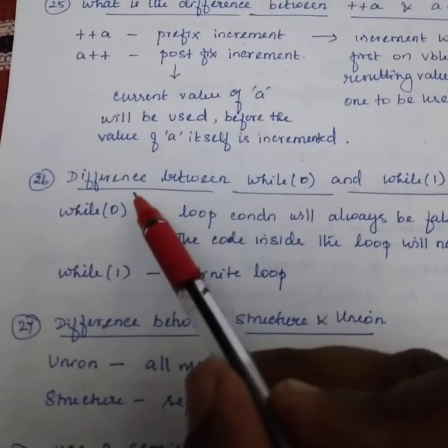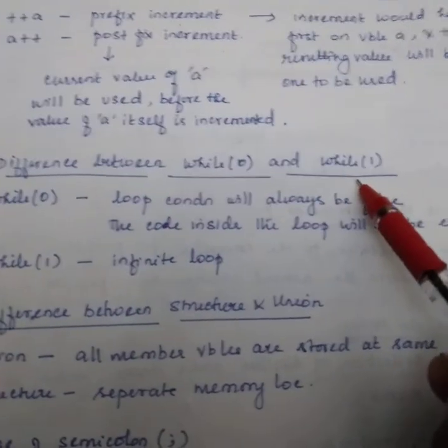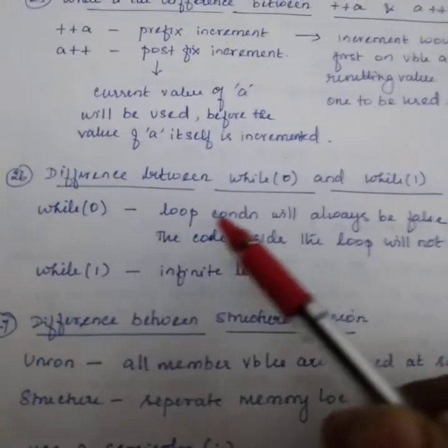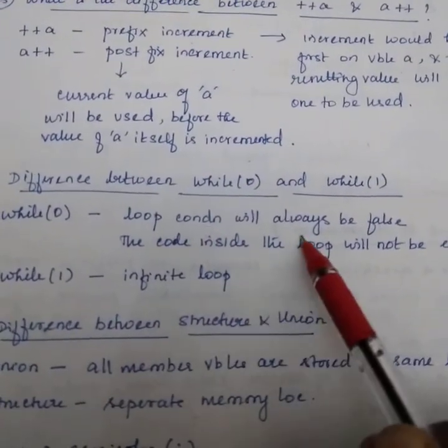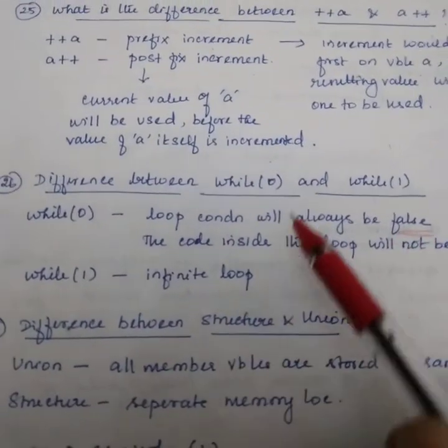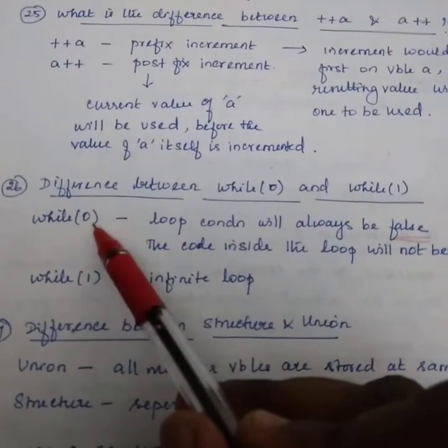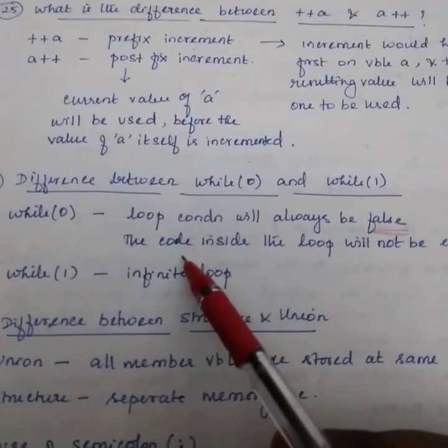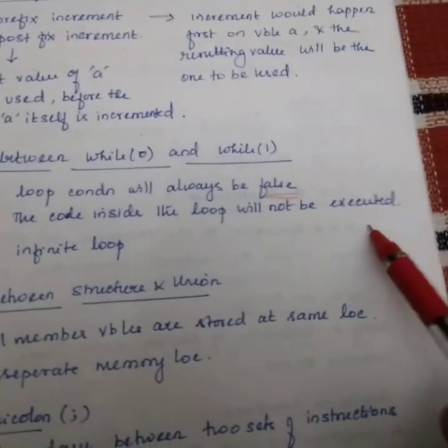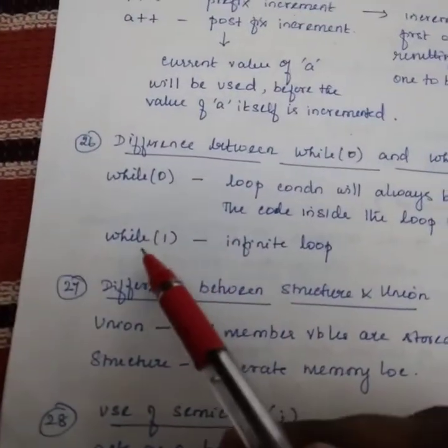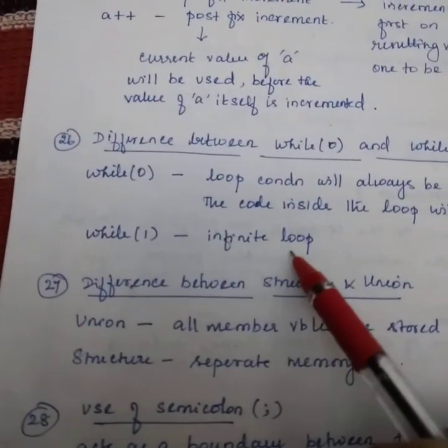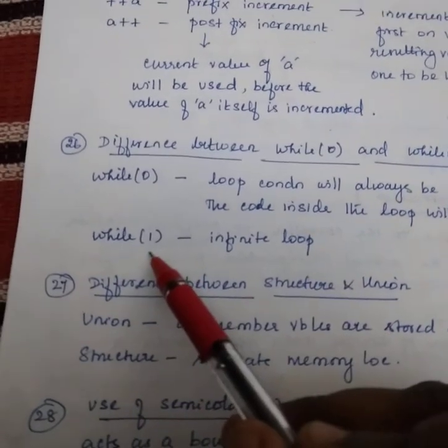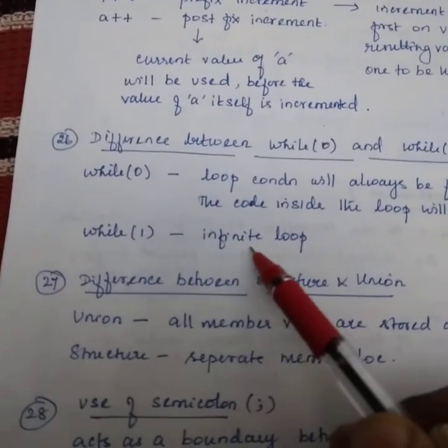Next one. Another important question. Difference between while(0) and while(1). While(0), loop condition will be always 0. The code inside the loop will not be executed at all. While(1), it is an infinite loop. Sometimes they will ask while(-1). That is also same thing, infinite loop.